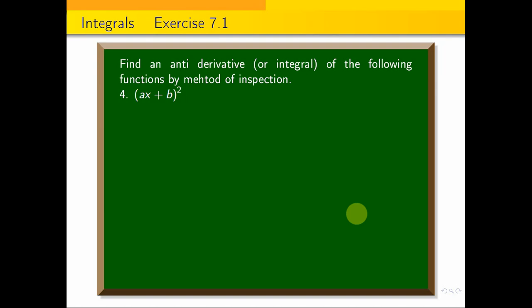I want to find the antiderivative of this function by the method of inspection. How to do that? We look for a function whose derivative is (ax + b)².